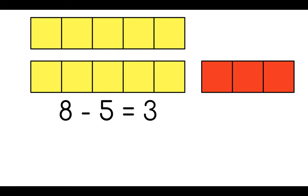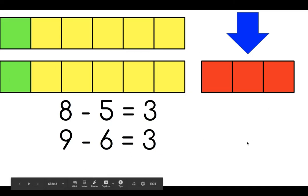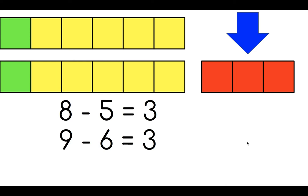A math equation to match this would be 8 subtract 5 equals 3. The difference between 8 and 5 is 3. It's represented here with our three red linking cubes. What would happen if I add two green linking cubes? One to the top row and one to the bottom row. Does it change the difference between the two rows? Look closely. It doesn't. I still have a difference of 3. However, it does change the math equation. I now have 9 linking cubes on the bottom row and 6 linking cubes on the top. But the difference is still 3.